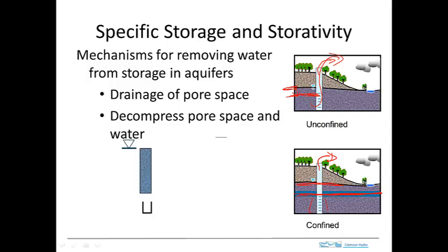Here's a graphical illustration of how the process works. This is a tube filled with sand and water, and we allow the tube to drain. The water table — the surface where pore pressure is equal to zero — drops. The pores drain and we get some water that has accumulated. That's water released from storage in the sand by gravity drainage.